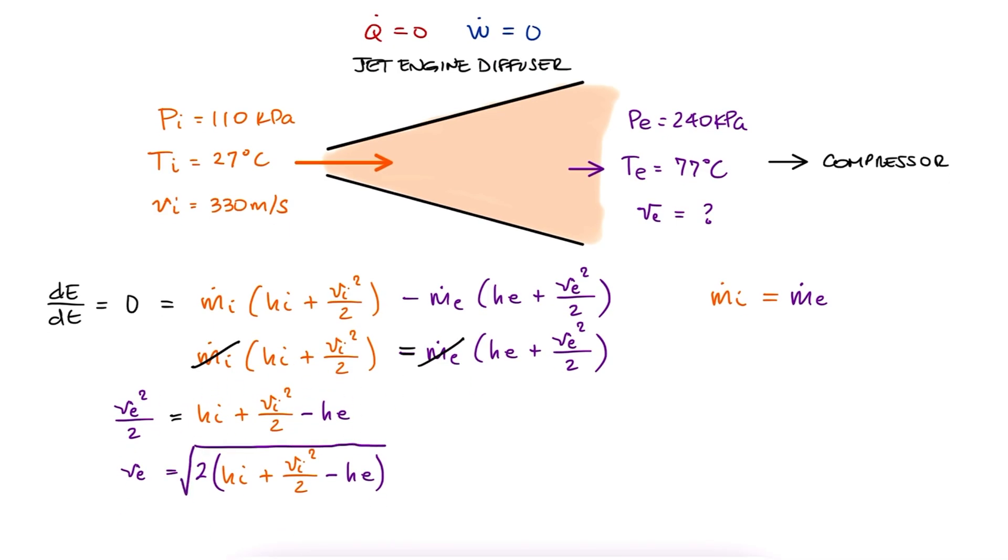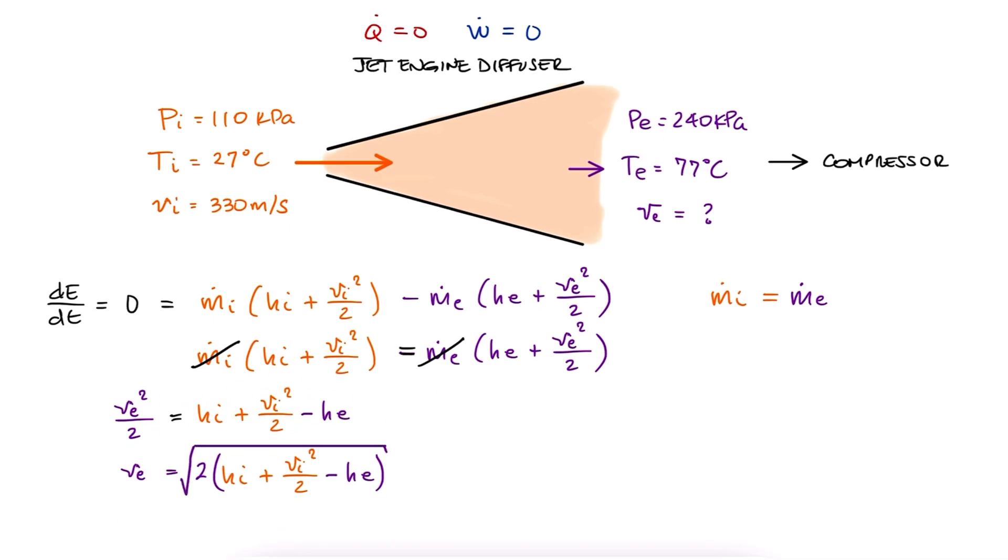Solving for the exit velocity here, we see that we need to calculate the specific enthalpy at the entrance and at the exit. Vi we already have.